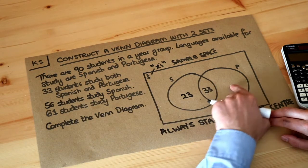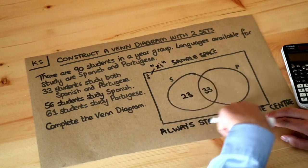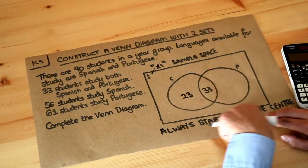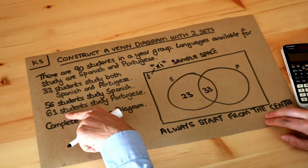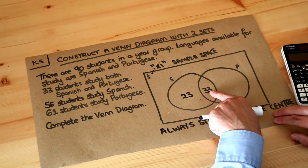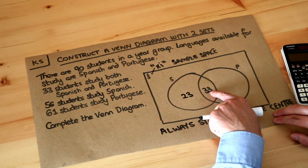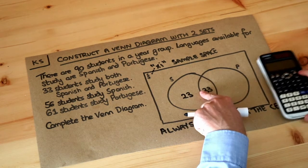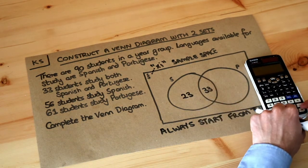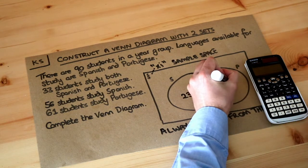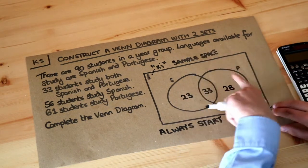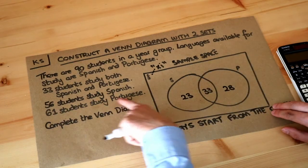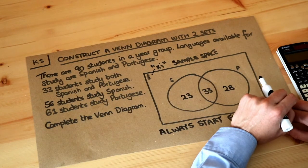Similarly, the total number of students who study Portuguese is 61. Since 33 of those students also study Spanish, the Portuguese-only region is 61 minus 33, which equals 28. All the numbers in the Portuguese circle now add up to 61, which is the total number of students who study Portuguese.